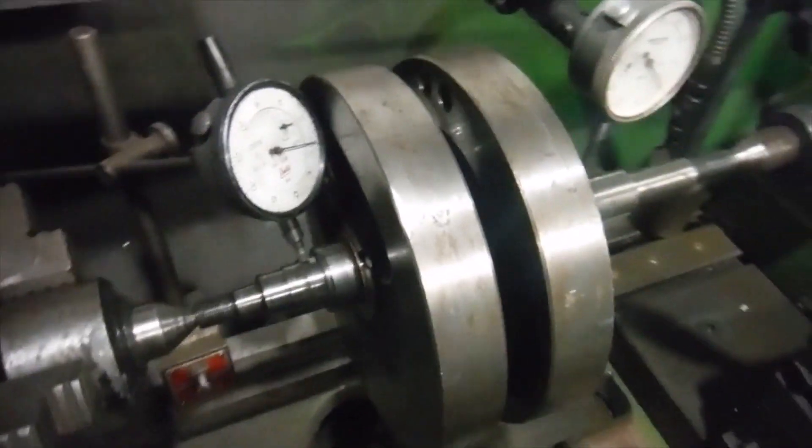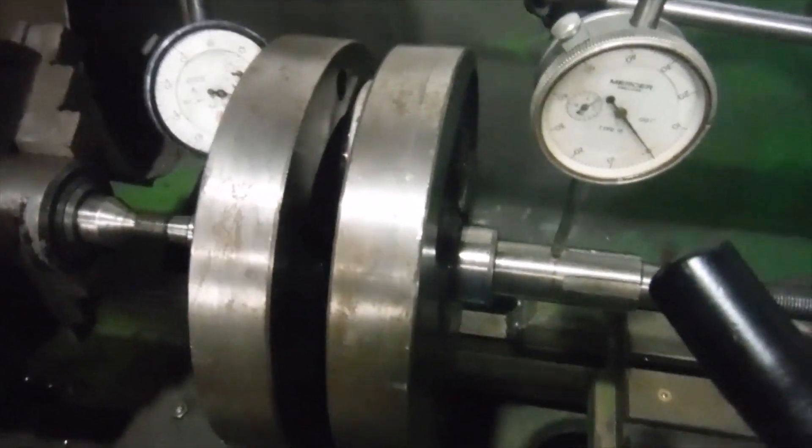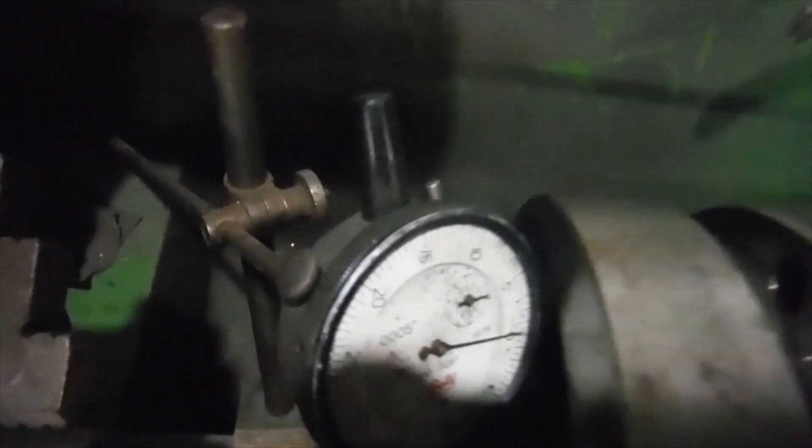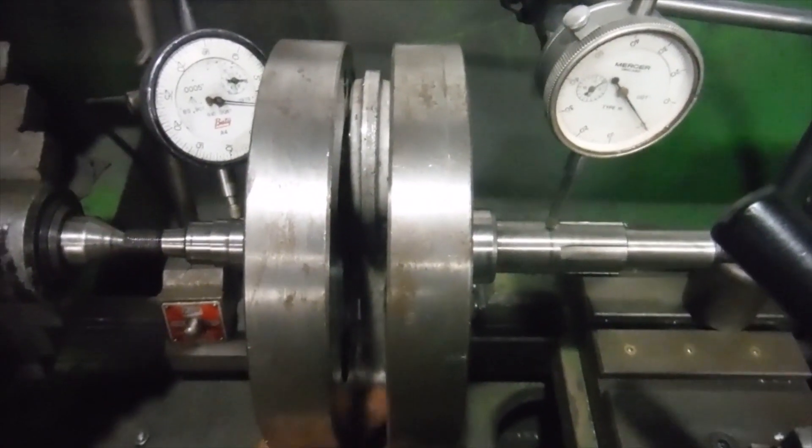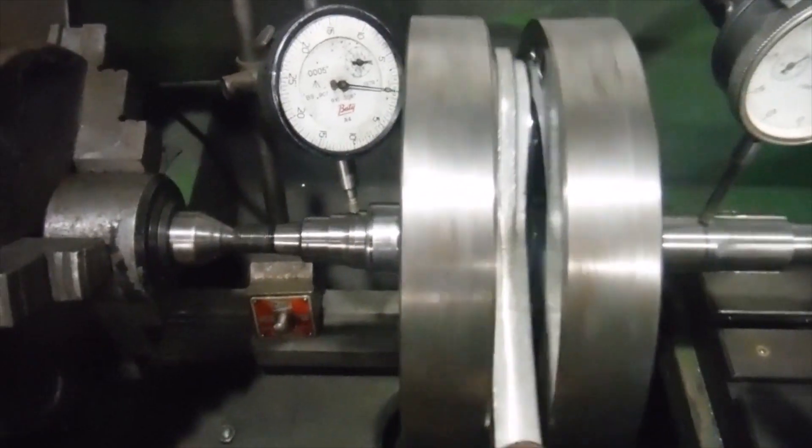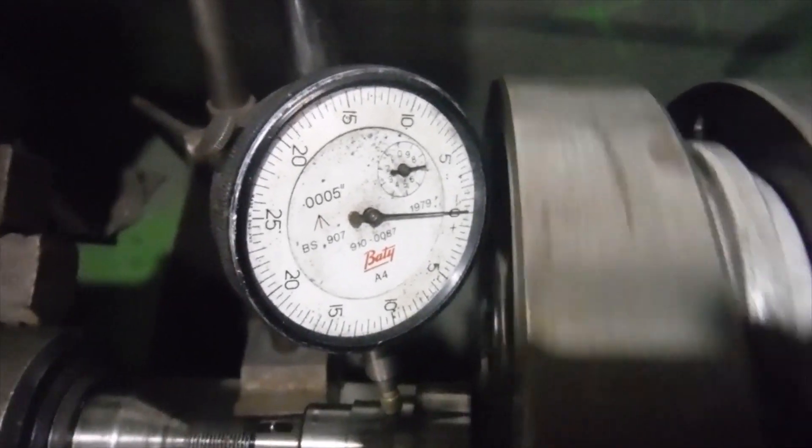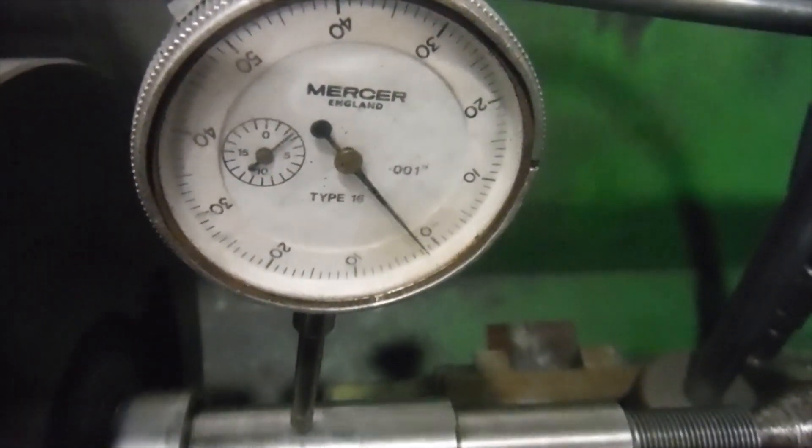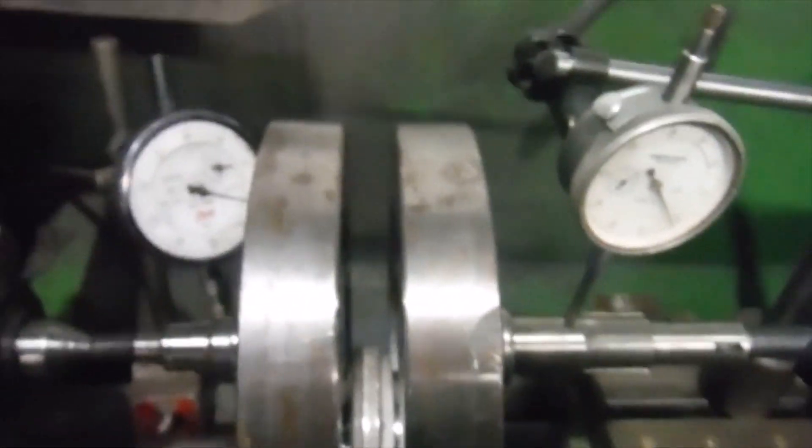Here we are back with this 500cc Royal Enfield bullet crank assembly again. I've been working on it and managed to get the run out figures down a little. Here we are with both clocks reading in thousandths of an inch, both on zero. Give the crank a bit of a spin and see what we've got. That one's moving up and down, fluctuating by one thousandth of an inch.